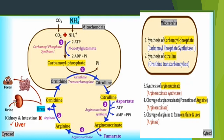After formation of arginine, the fifth and final step is the cleavage of arginine to form ornithine and urea. Arginine is broken down to regenerate ornithine and produce urea. This step is catalyzed by the enzyme arginase, which is primarily present in the liver and absent in the kidney and intestine. Although arginine is formed in the kidney and intestine, it is not converted to urea there due to the absence of arginase.